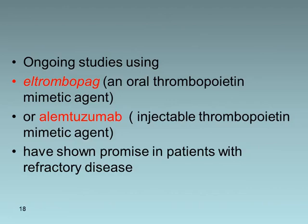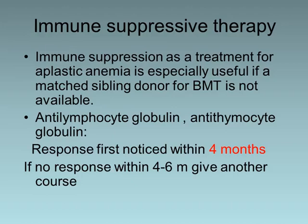Ongoing studies are using eltrombopag, which is an oral thrombopoietin-mimicking agent, or romiplostim, which is an injectable thrombopoietin-mimicking agent, to be given in refractory cases to increase the platelet count and prevent bleeding.